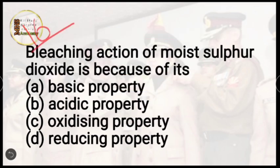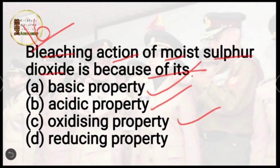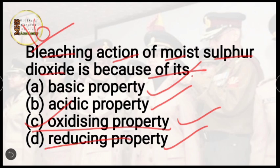Question number 16: the bleaching action of moist sulfur dioxide is because of its — basic property, acidic property, oxidizing property, or reducing property? The correct answer is oxidizing property. The tendency of an element to gain electrons is called oxidizing property, and its opposite is reducing property, which is the tendency to lose electrons.